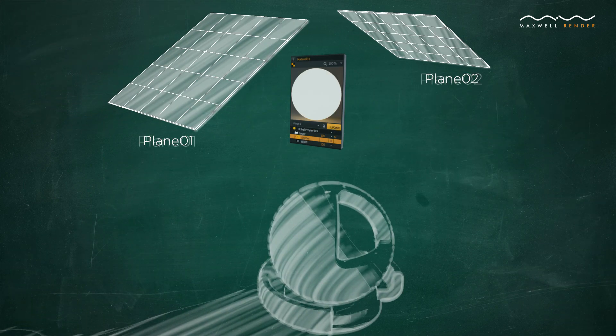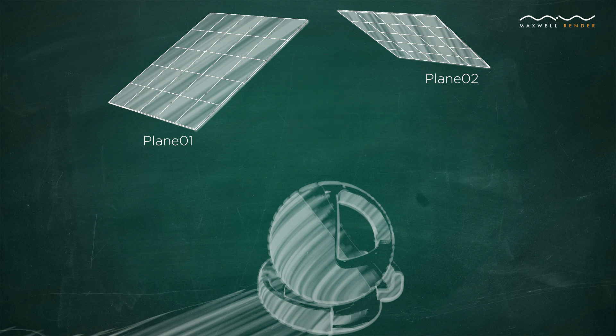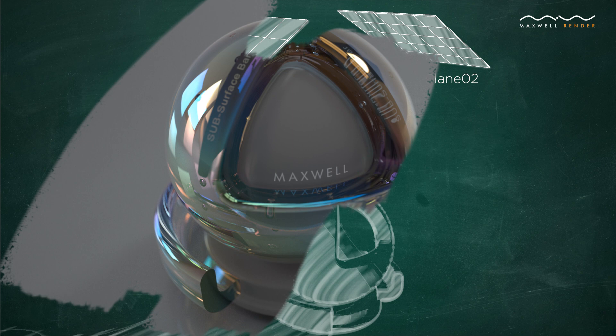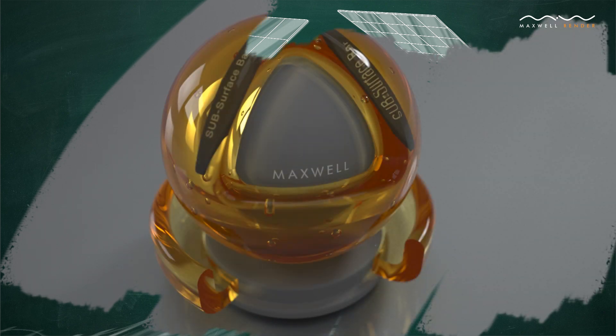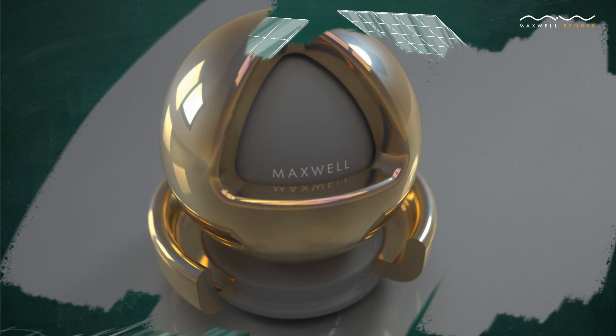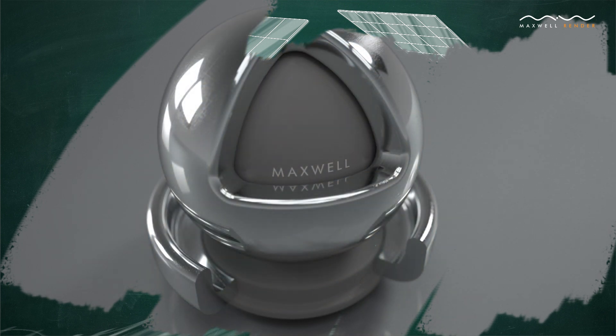This approach to simulate lights emulates what happens in the real world and mimics real-world lights, producing a high degree of realism, outputting smooth shadows, providing a natural light distribution in your scene, and increasing the overall quality of your image.